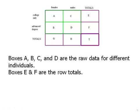E and F are the row totals. We add across the rows to get everything on the right. So A plus C equals E. B plus D equals F. E would be the total number of people with a college degree only. F would be the total number of people with an advanced degree only.